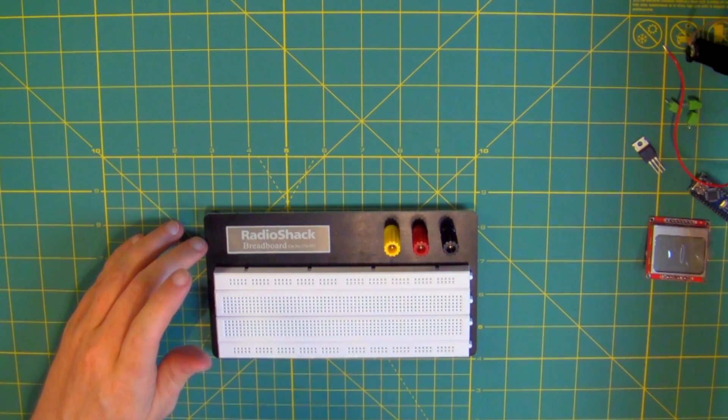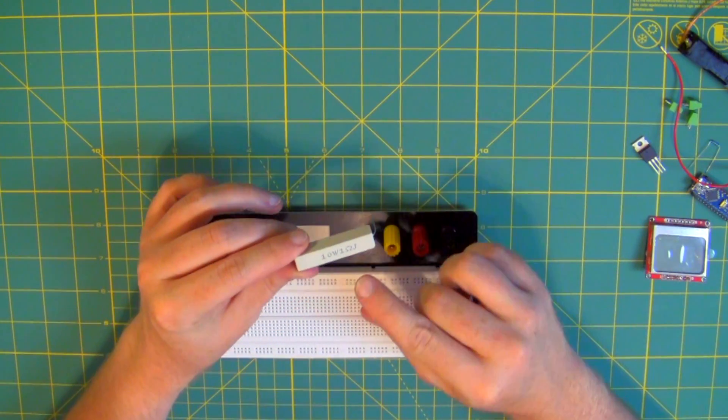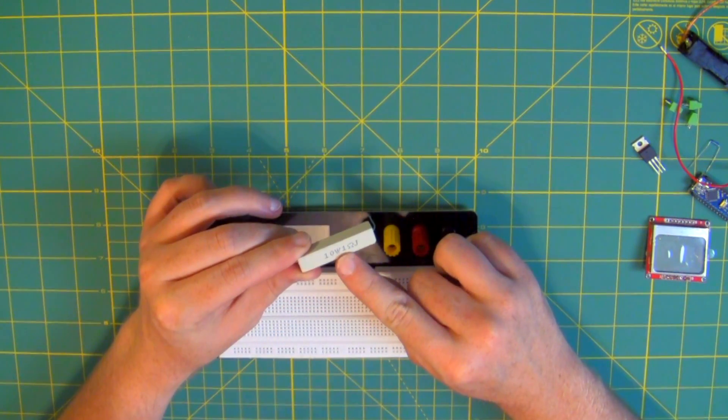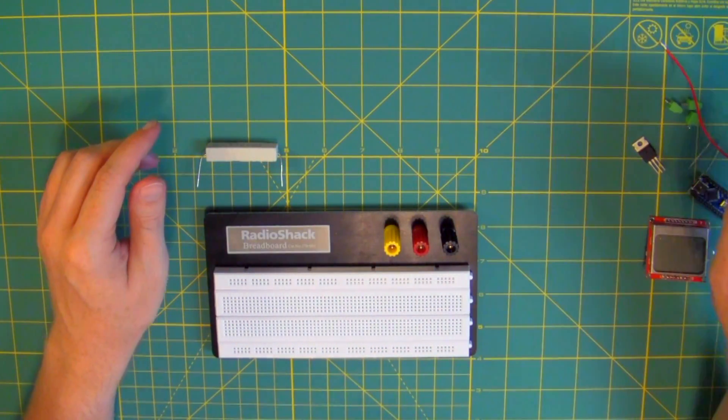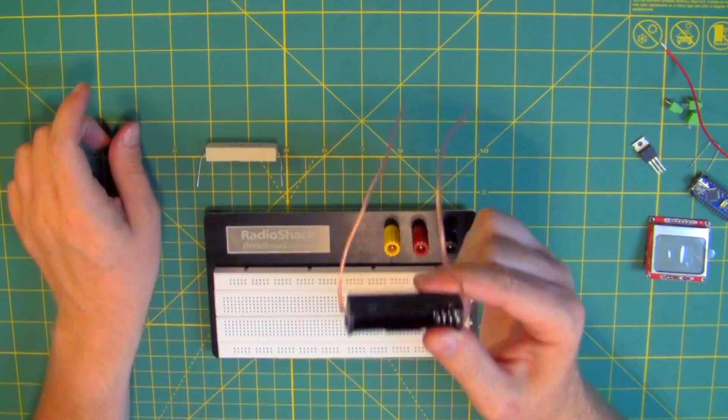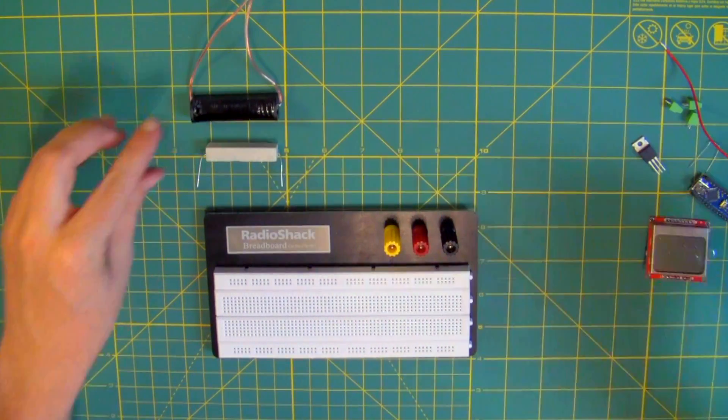For our shunt, we're going to use this 10 watt 1 ohm ceramic resistor. To connect the battery, we'll use this single cell AA battery holder. Of course, I've already soldered a couple of leads off the terminals so I can actually use it.